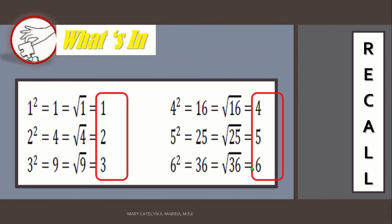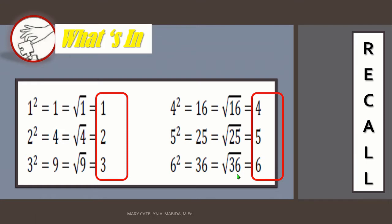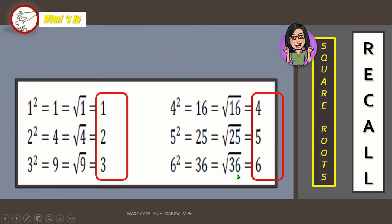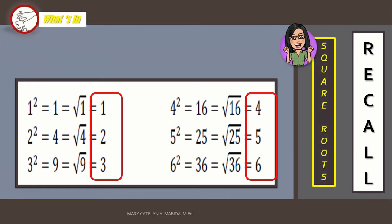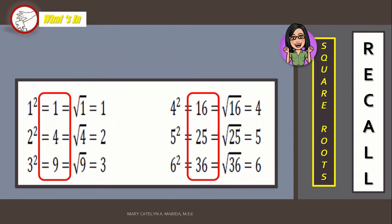Now, 1, 2, 3, 4, 5, and 6 are square roots of 1, 4, 9, 16, 25, and 36, respectively.